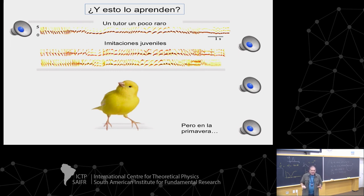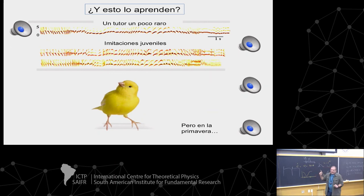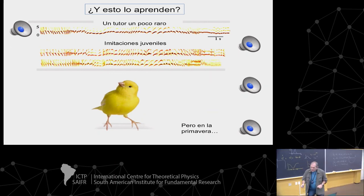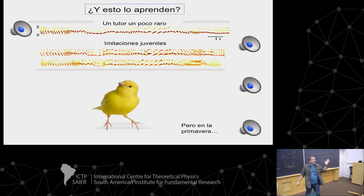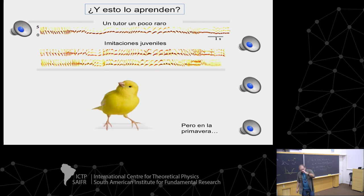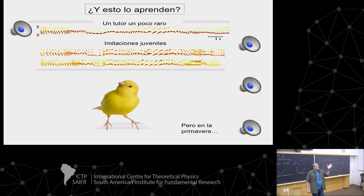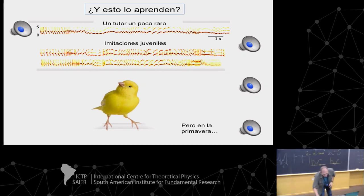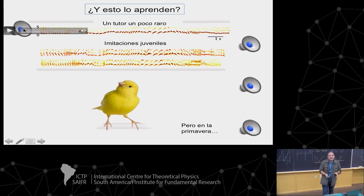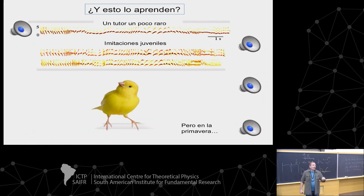We did this very simple model — each syllable was reasonably good for a canary, but instead of repeating a syllable like a canary does, we smoothly changed the phase difference between the motor gestures, so it was artificial. We wanted to know whether the bird would accept that as a tutor. So we were playing this weird song — this is really garage physics, an experiment you can do with your grandmother's canary and a computer.